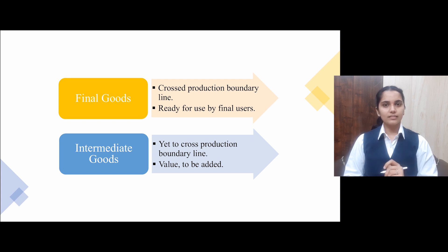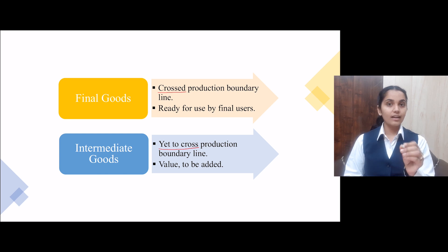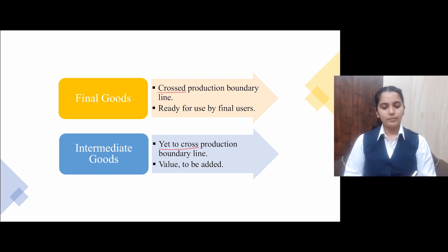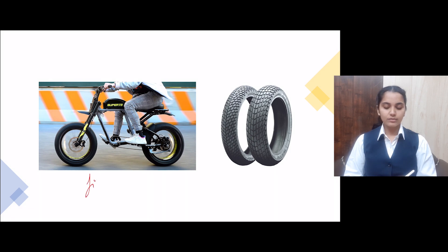If we talk about final goods, those are goods which have crossed the production boundary and are finally ready for your use. But for intermediate goods, they are still in the production line, under progress, and full value has not yet been added to them — value is still to be added. Final goods are ready for your use. For example, if you have purchased a particular bike, that will be a final good for you, because you don't need to add any value to it; you can directly use it.